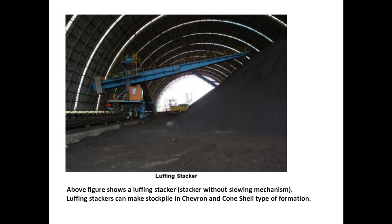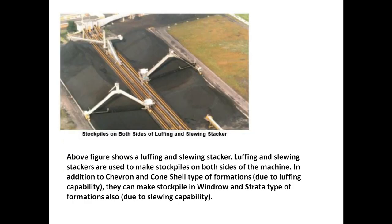A luffing stacker is a stacker without a slewing mechanism. Luffing stackers can make chevron and cone shell type stockpile formations. Luffing and slewing stackers are used to make stockpiles on both sides of the machine. In addition to chevron and cone shell formations, they can also make windrow and strata type formations.